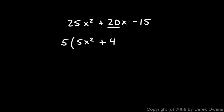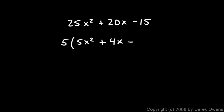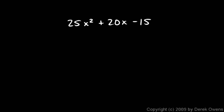Then I have a plus sign. What do I need to multiply 5 by to give me 20x? I need to multiply by 4x, because 5 times 4 gives me the 20 and I still need an x. Then what do I need to multiply 5 by to give me negative 15? That would be negative 3. So the factored form is 5(5x² + 4x - 3).